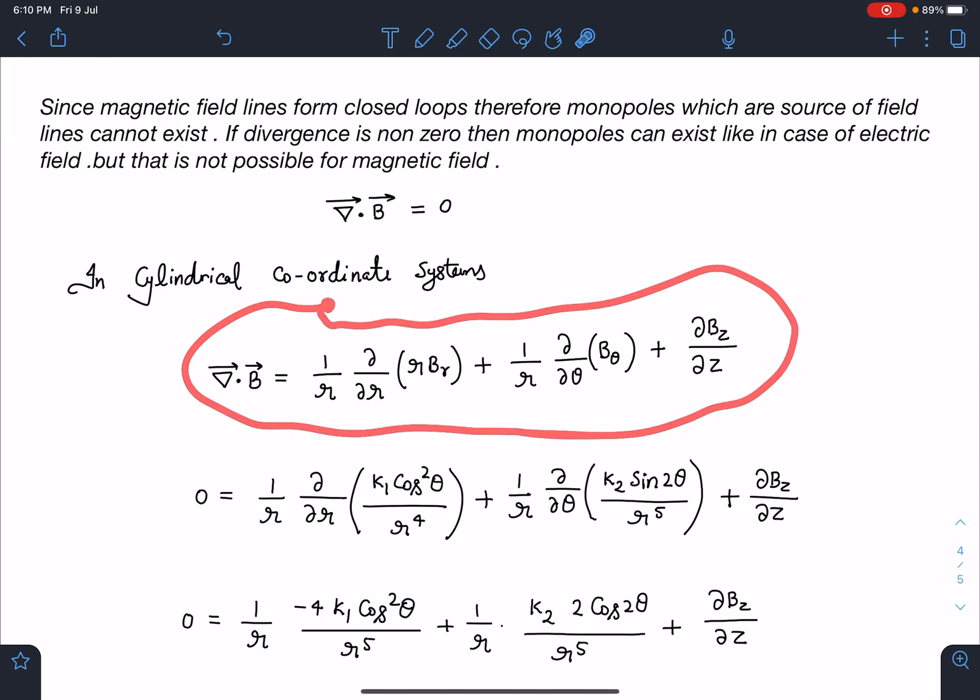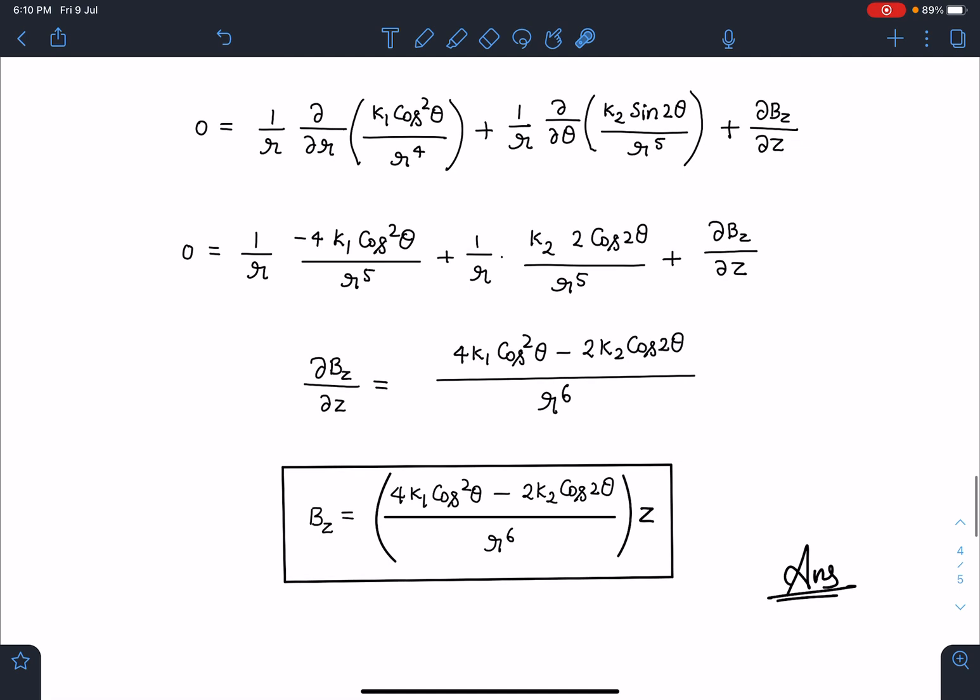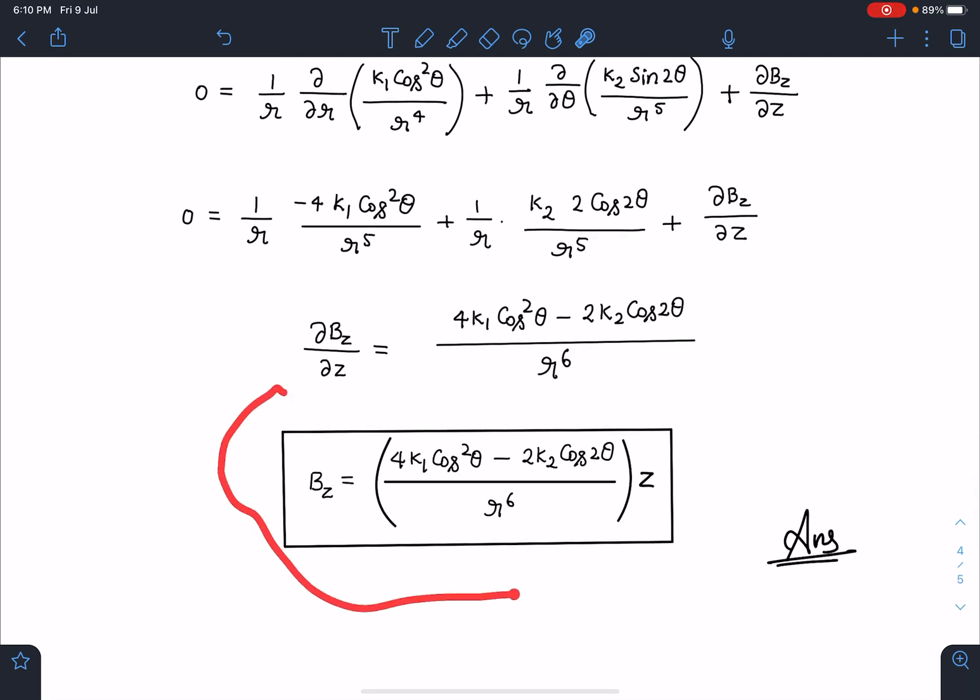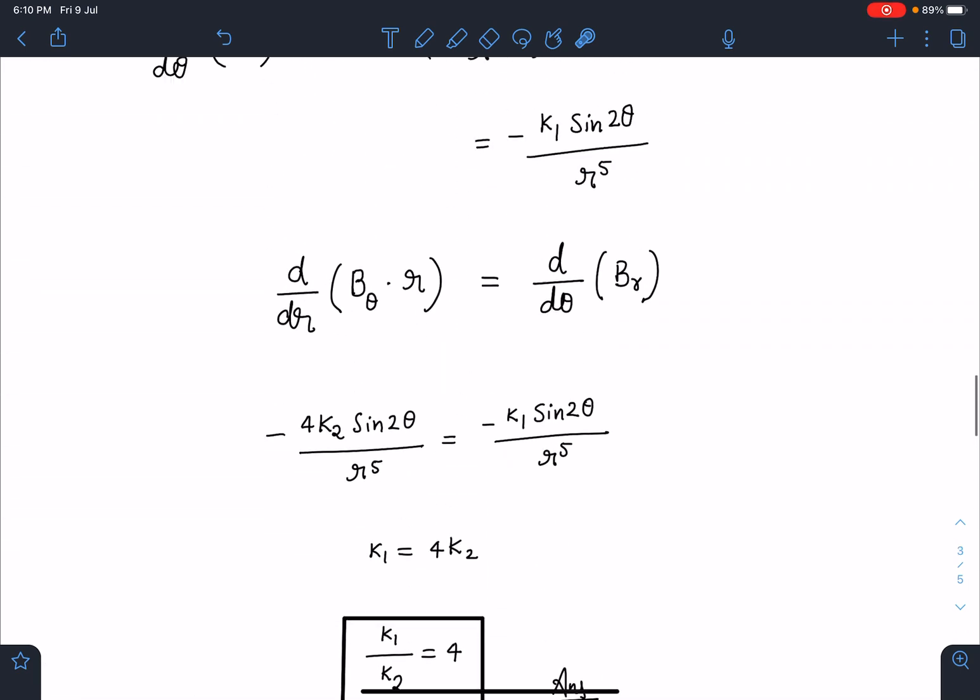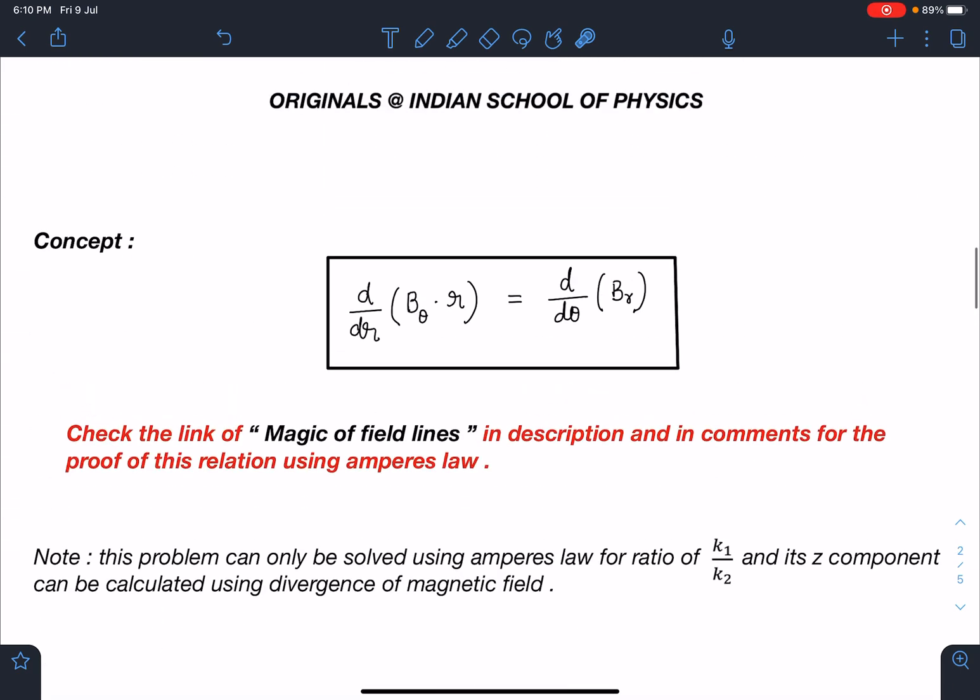So that's the reason this del dot B is going to be zero. In cylindrical coordinates, this is the expression of divergence. When I substitute the values, I am going to get this z coordinate. I'm not explaining the calculation here. B_z is 4k1 cos squared theta minus 2k2 cos 2 theta by r to the power 6 times z. Now such type of z component must exist otherwise divergence will not be zero.